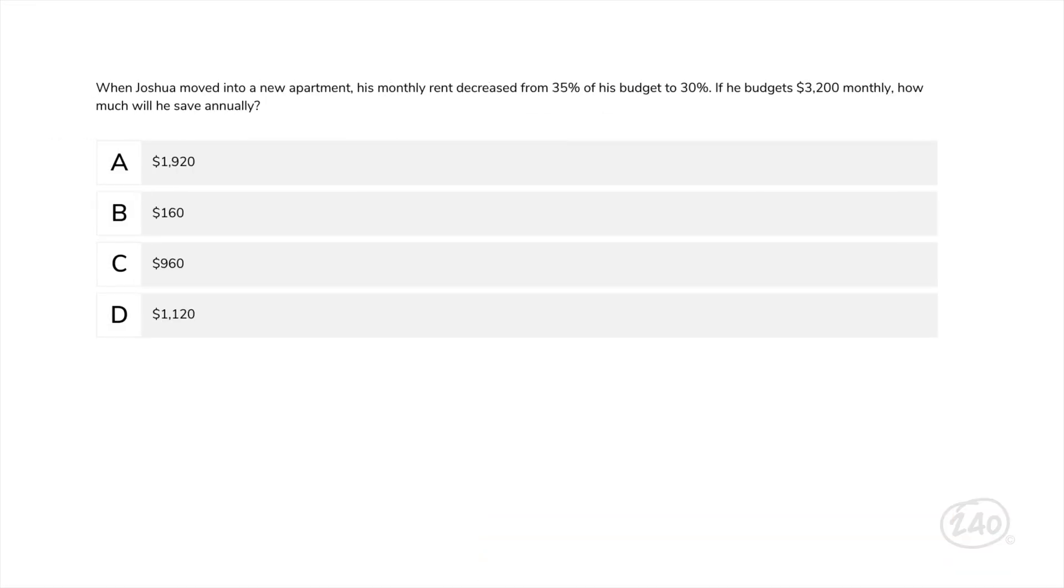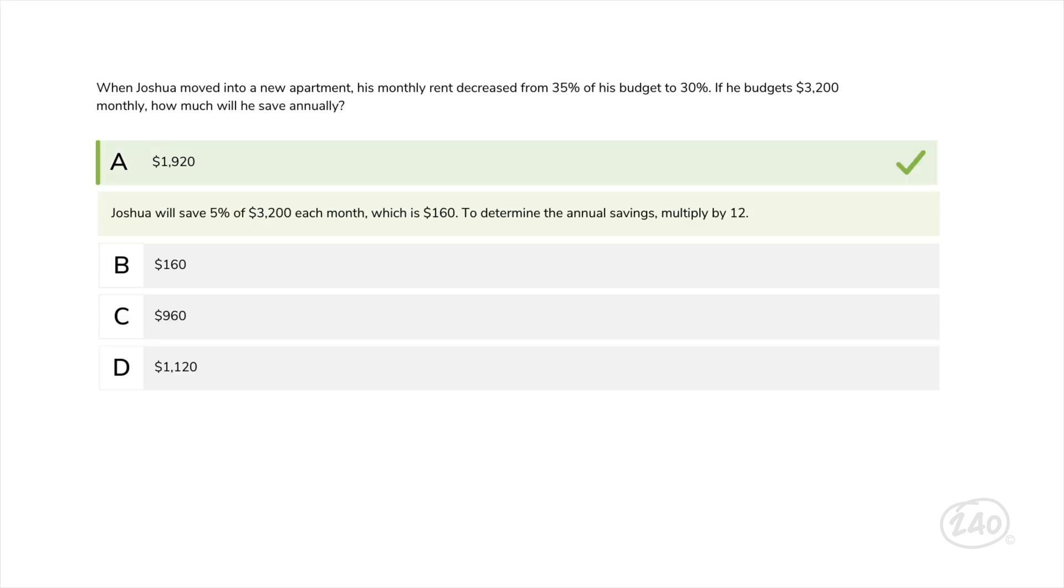When Joshua moved into a new apartment, his monthly rent decreased from 35% of his budget to 30%. If he budgets $3,200 monthly, how much will he save annually? This goes back to ratios. Joshua will save 5% of $3,200 each month, which is $160. But the question asks for annual savings, so we'll multiply it by 12 months. That means our correct answer is... A.